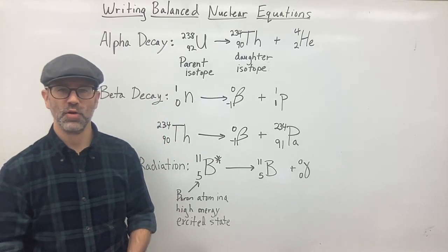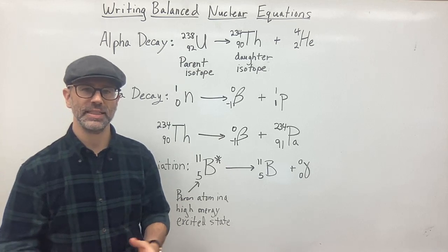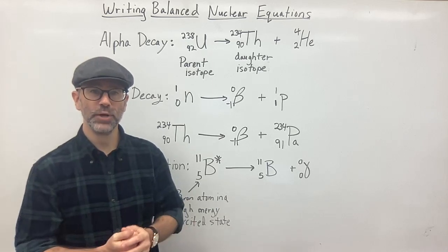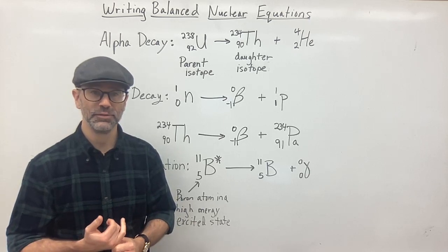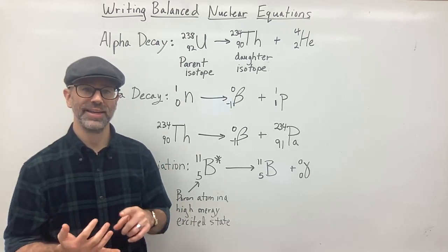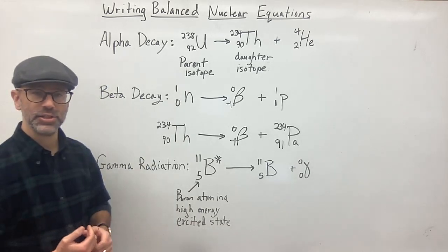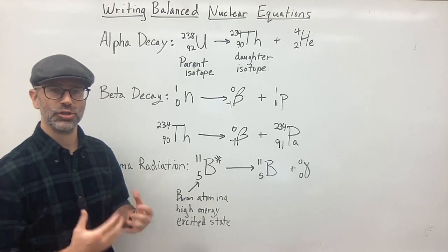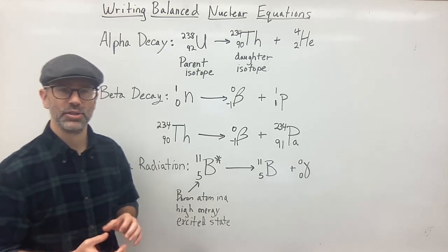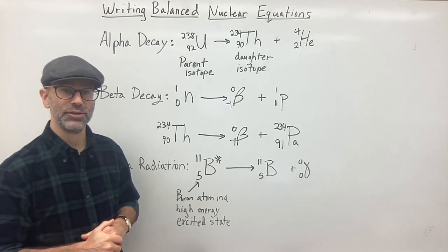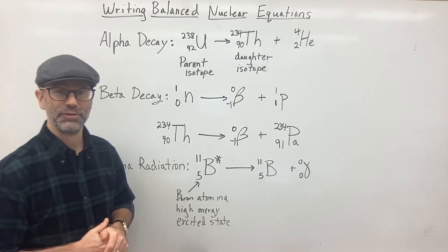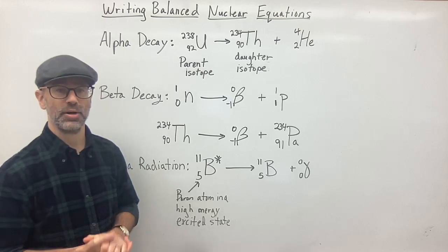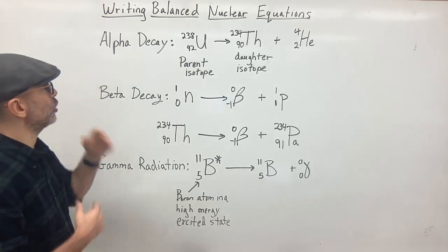Hello everyone and welcome back. My name is Mr. Cobalt and in this video I'm going to go over balancing or writing balanced nuclear equations. The three types of decay I went over in a past video are alpha decay, beta decay, and gamma radiation. In this video I'm going to show you what a balanced nuclear equation looks like and the key components to having a balanced nuclear equation. In another video I'll go over how to balance equations when a part is missing.